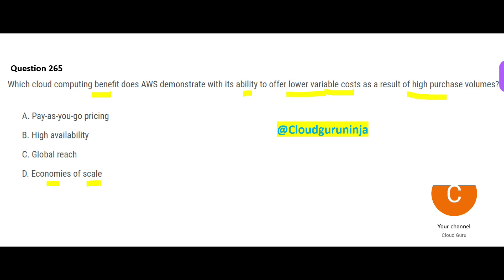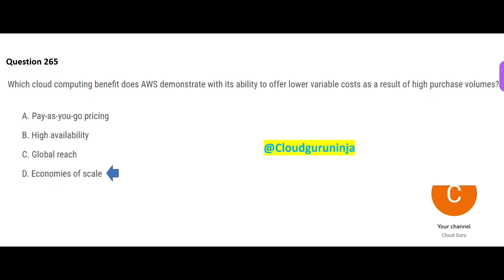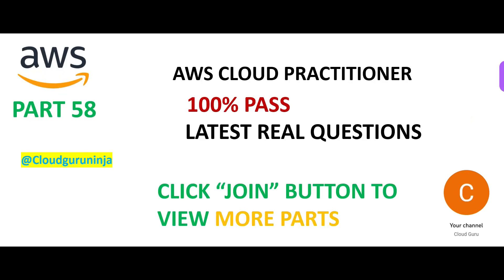Pay-as-you-go pricing converts CapEx to OpEx — in real life you buy software and hardware on premises, but in the cloud you just pay per use. High availability means multiple data centers host the same application so it stays available. Global reach means if your app is hosted in Ohio, people from India, Singapore, the UK, and Europe can all access it.